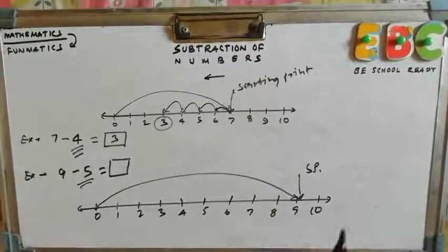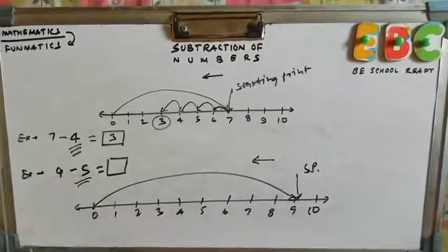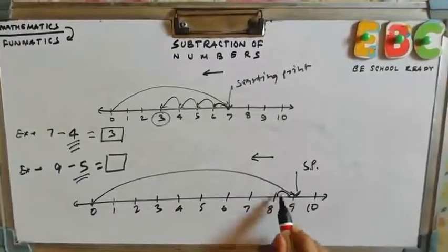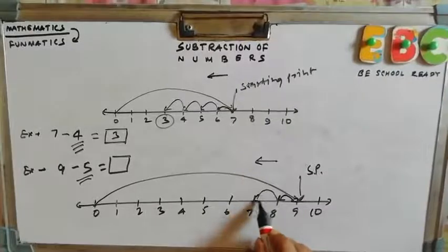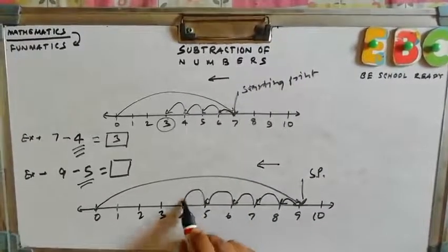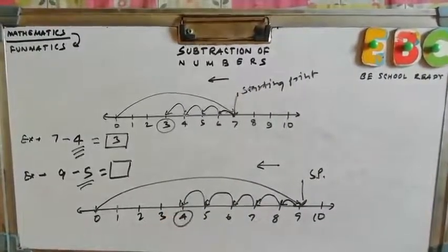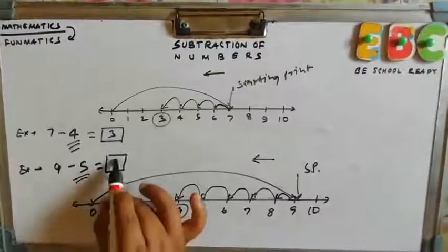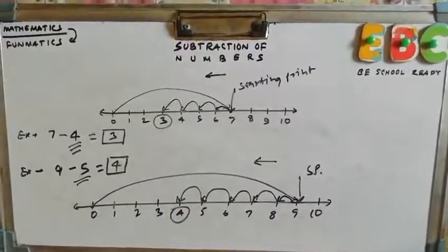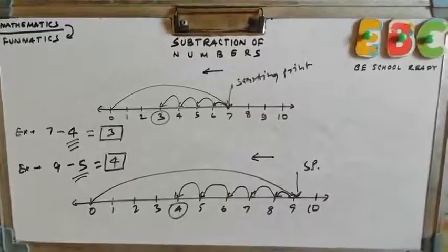We will take reverse direction jump. How many? 5. So first jump, second, third, fourth and fifth. Where is that? 4. So 9 minus 5 is equal to 4. Hope you understand.